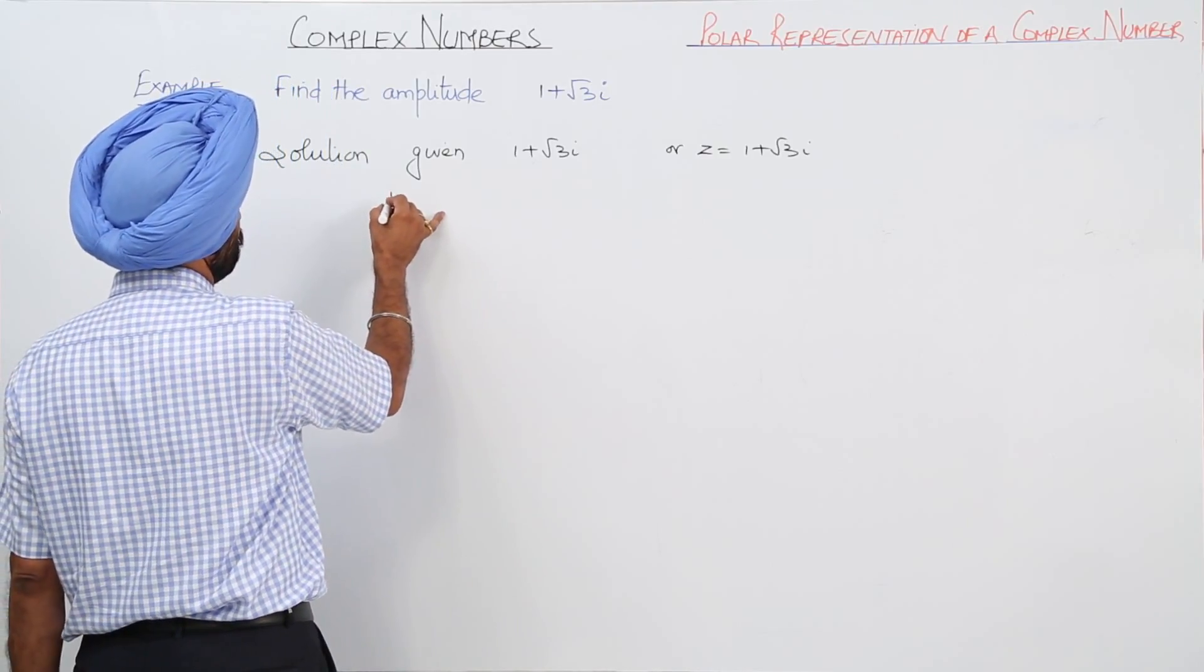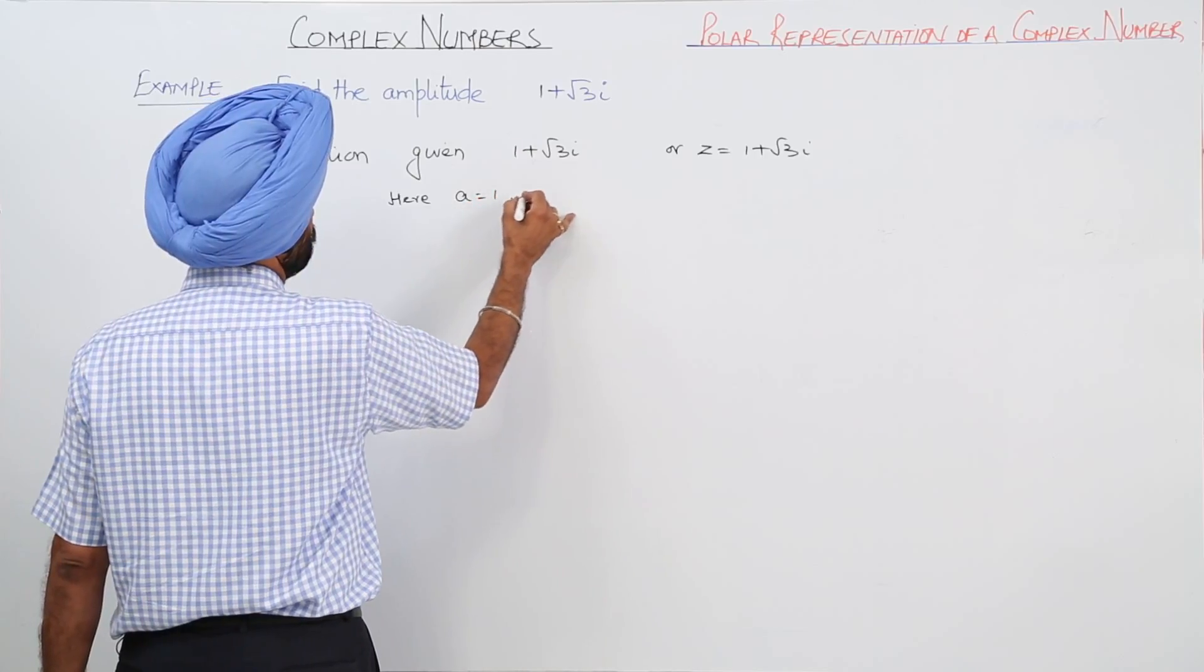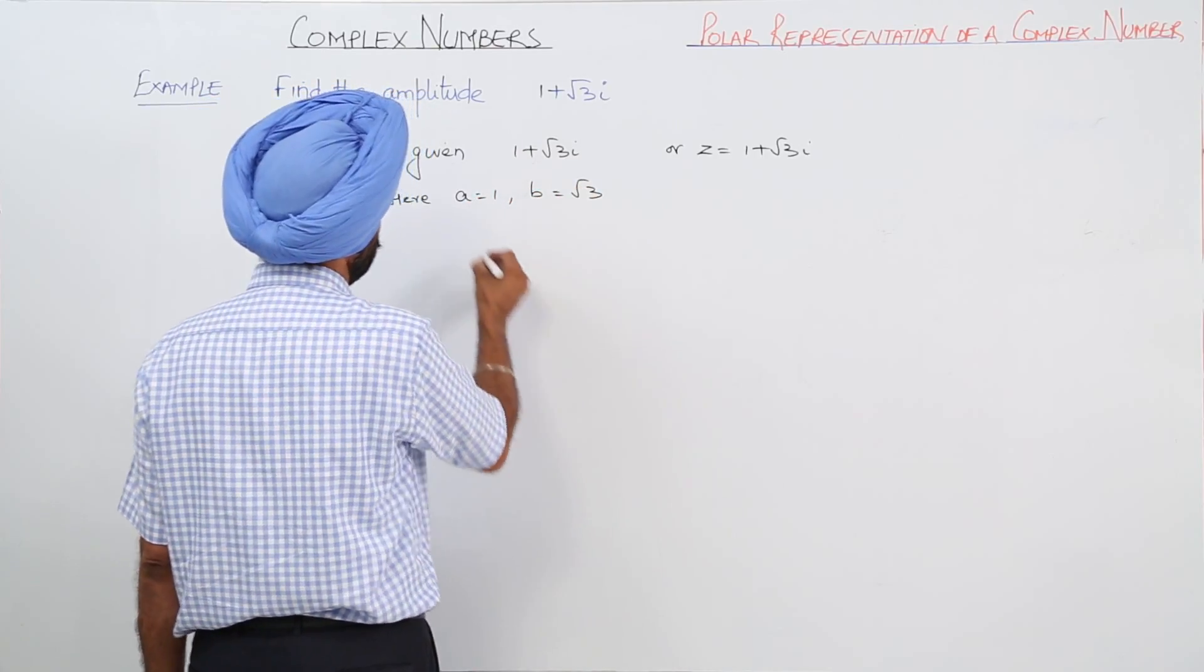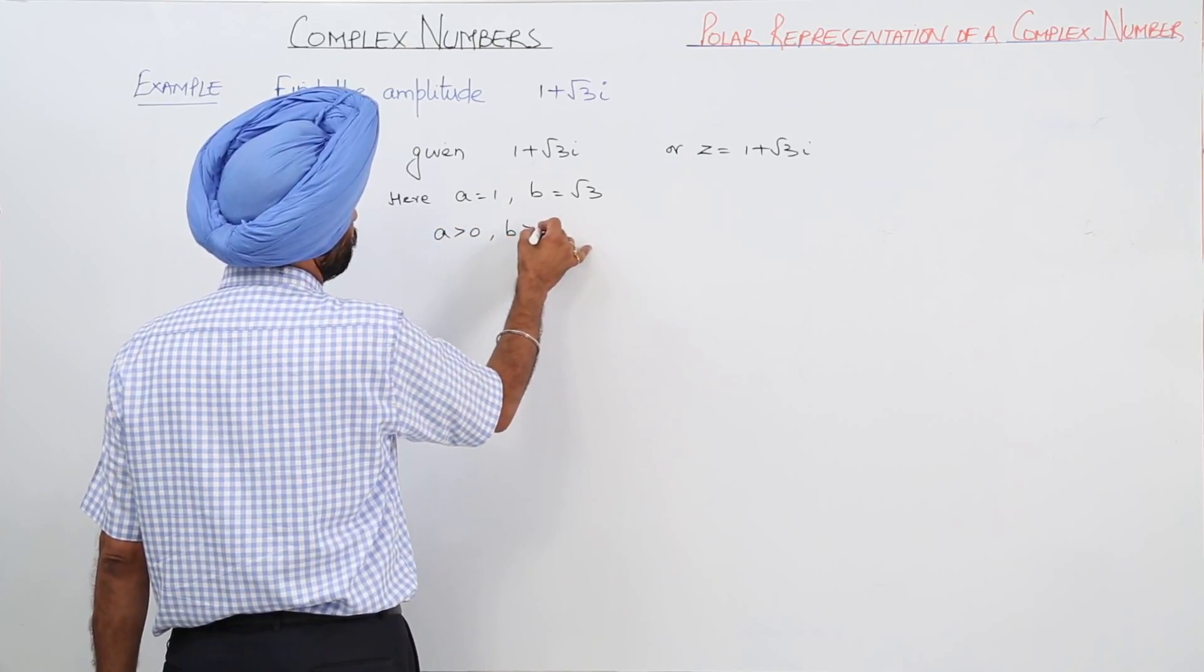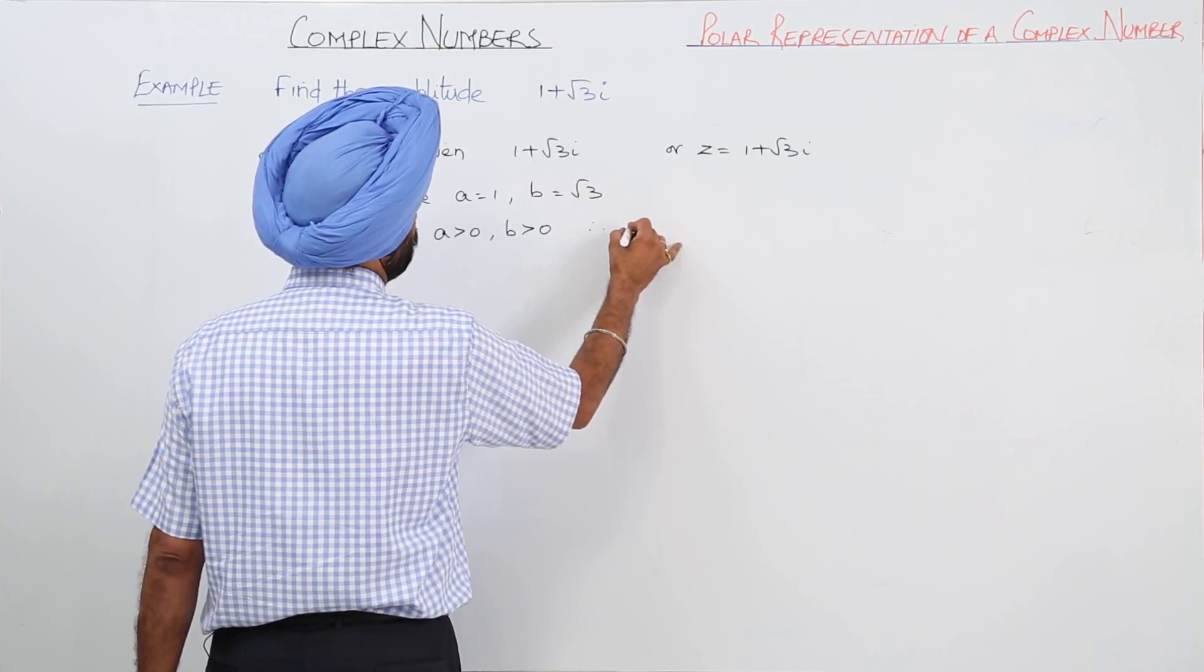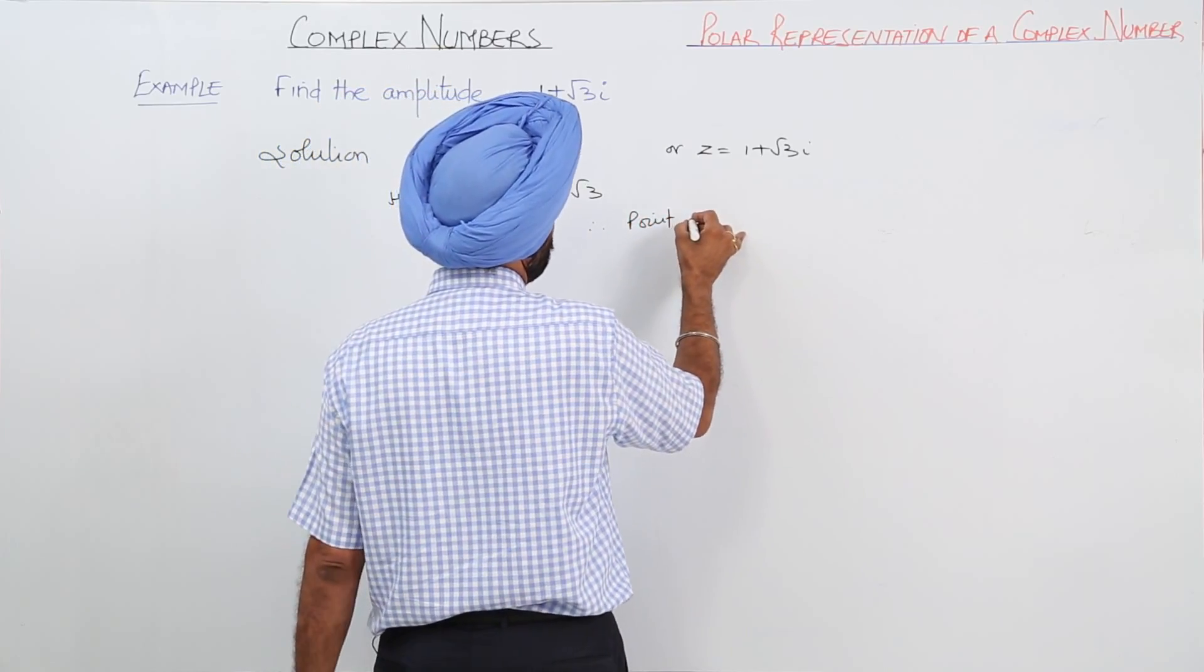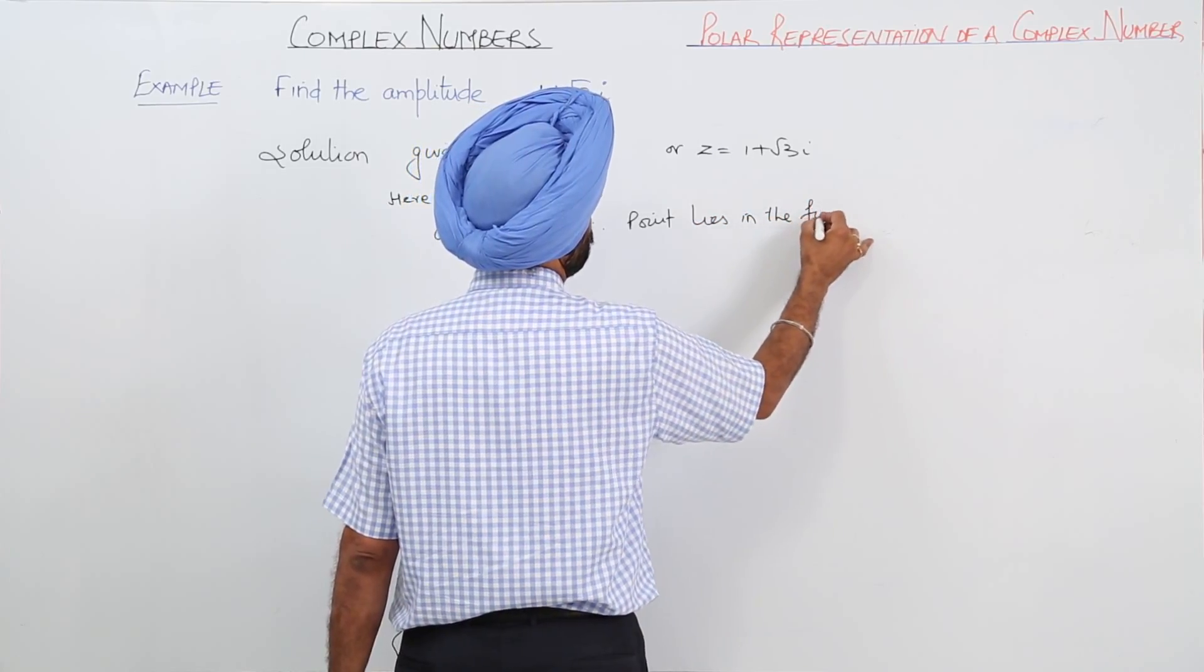Here A equals 1 and B equals root 3. Now A is greater than 0, B is greater than 0. Therefore, the point lies in the first quadrant.